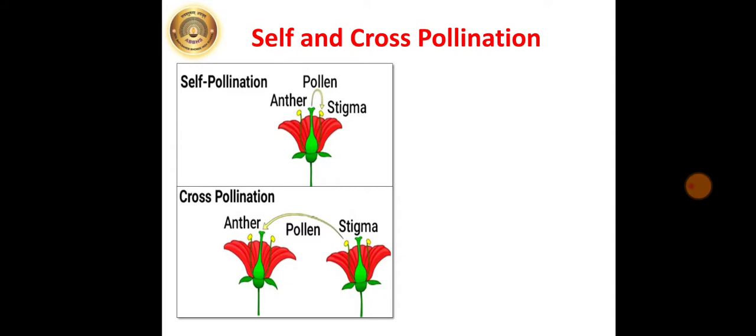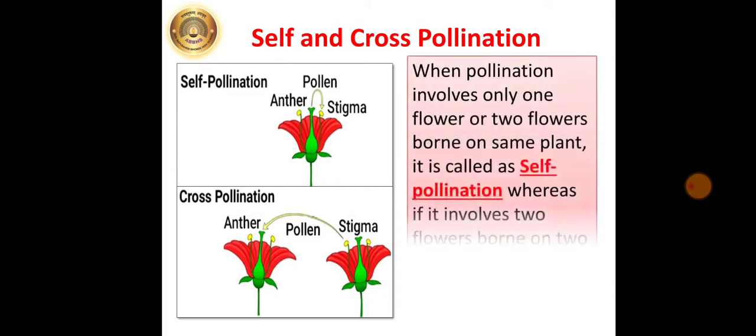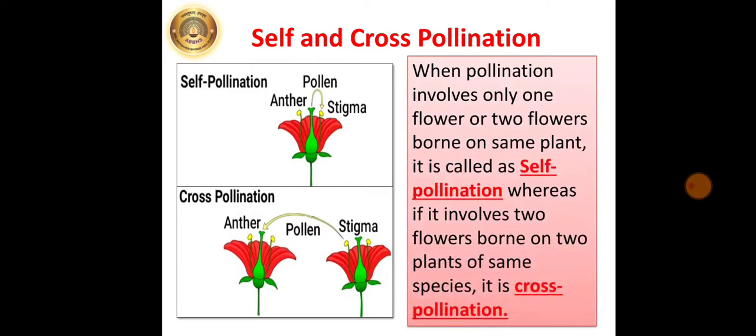Next we are going to see self and cross pollination. When pollination involves only one flower or two flowers born on same plant, it is called as self pollination. Whereas, if it involves two flowers born on two plants of same species, then it is known as cross pollination. Just mark this on page number 27, the last box.